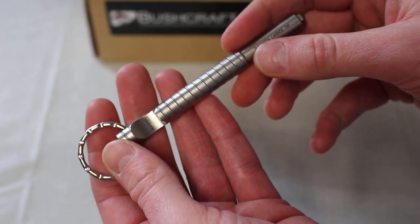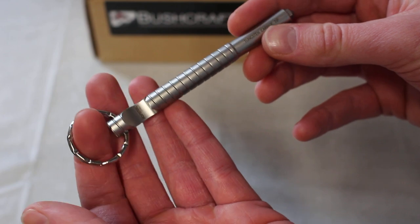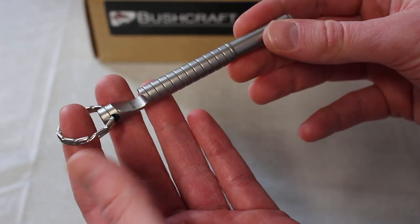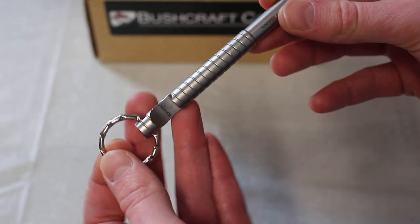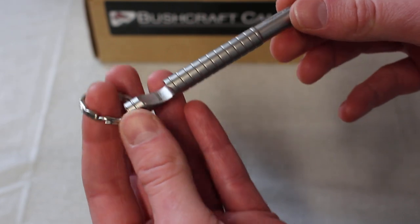Hello there, this is David from bushcraftcanada.com. This is just a quick product review for you today. This is called the Escapa and it's made by Lionsteel. As you can see on one end it has a bottle opener.